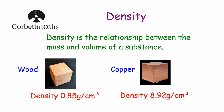Copper has got a density of 8.92 grams per centimetre cubed, which means that if you had a 1 centimetre cube of copper it would have a mass of 8.92 grams. Whereas this particular type of wood has a density of 0.85 grams per centimetre cubed — so a 1 centimetre cube of this wood would have a mass of 0.85 grams. So obviously the copper would be much heavier than the wood if they've got the same volume.